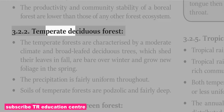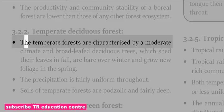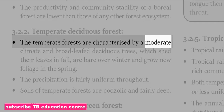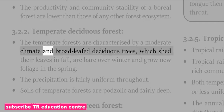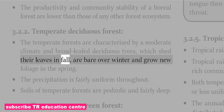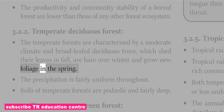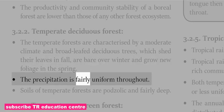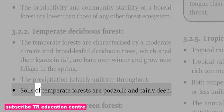The temperate deciduous forests are characterized by a moderate climate and broadleaf deciduous trees, which shed their leaves in fall, are bare over winter, and grow new foliage in the spring. Precipitation is fairly uniform throughout. Soils of temperate forests are podzolic and fairly deep.